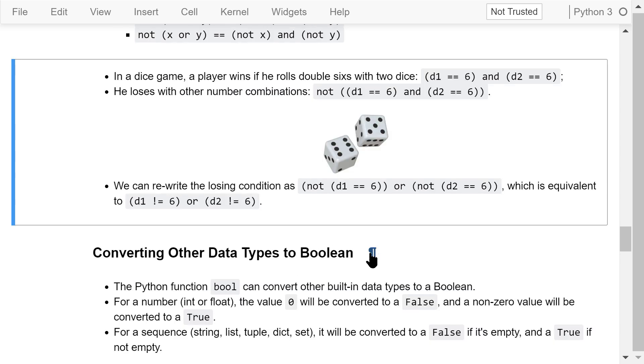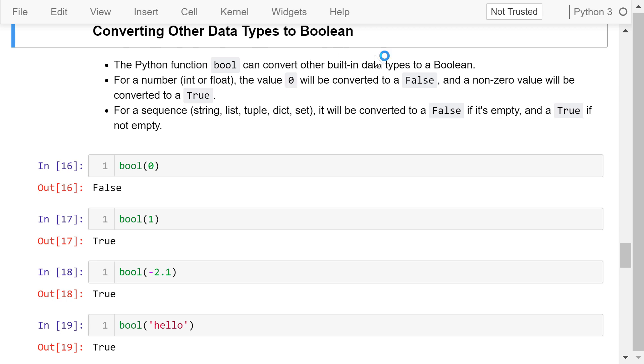We can use the Python function bool to convert other built-in data types to a boolean. Python will use the following two general rules to do this. For an integer or float number, the value 0 will be converted to false, and a non-zero value will be converted to true. For a string, list, tuple, dictionary, or set, it will be converted to false if it's empty, and true if not empty.